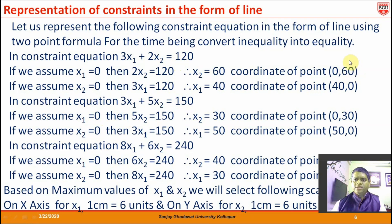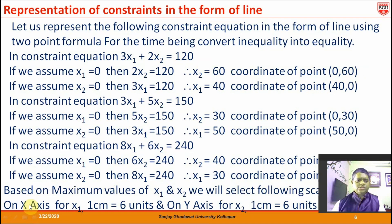Looking at the points obtained from all three constraint equations, the maximum value is 60. Based on the maximum values, we have to select a suitable scale. Here we have selected a scale such that on the x-axis for x1, 1 centimeter equals 6 units, and on the y-axis for x2, 1 centimeter also equals 6 units.